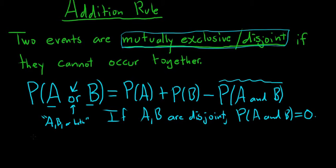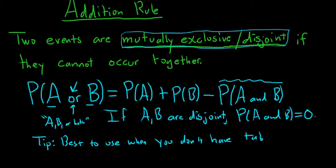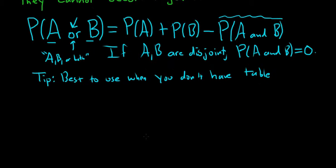However, generally when you have a table, like there's a table in the problem, you avoid the formula. So just a tip, this is best to use when you don't have a table. If you have a table, there's an easier way to do problems. You can avoid the formula. Let's go ahead and do just one simple example of the formula just so you see how it works.